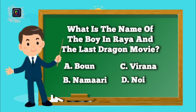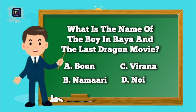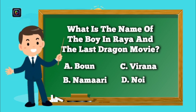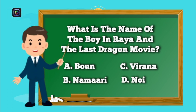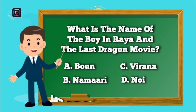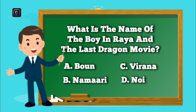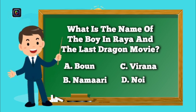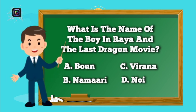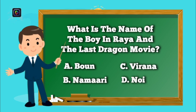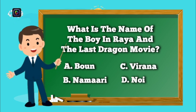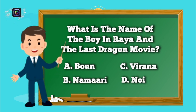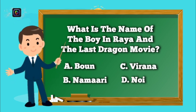Question number 1. What is the name of the boy in Raya and the Last Dragon movie? Is it A, Bone? B, Namari? C, Verana? Or D, Noi?